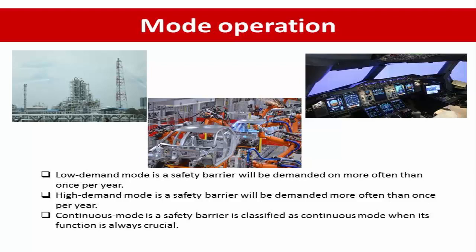The second is high demand mode, where a safety barrier will be demanded more often than once per year. For example, the sensing system of a robot machine in an automation or car production factory is considered a high demand mode safety barrier.